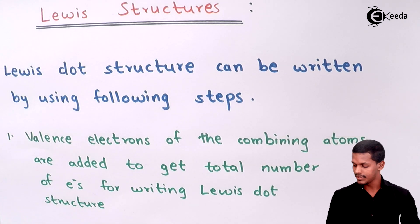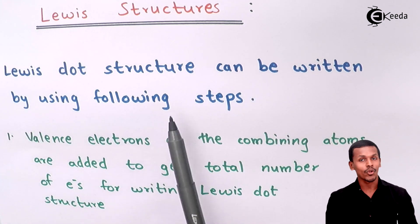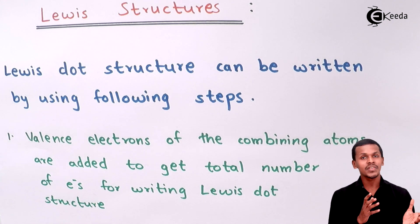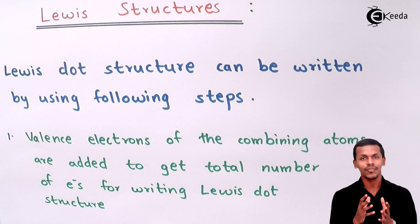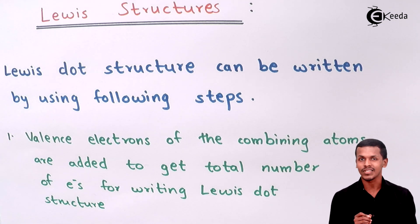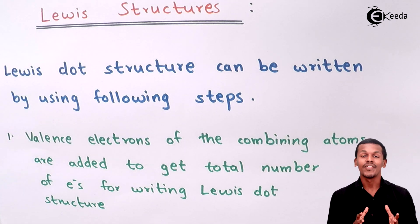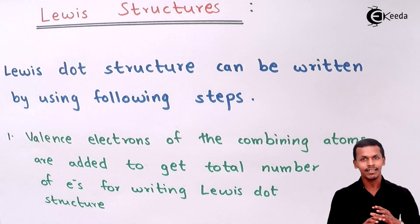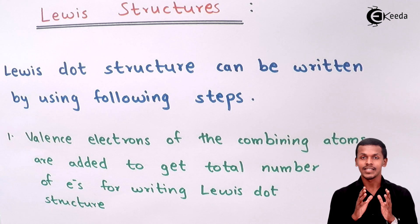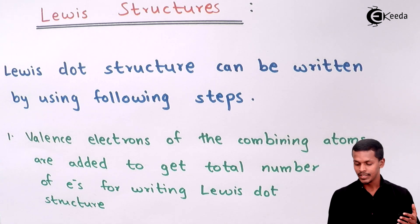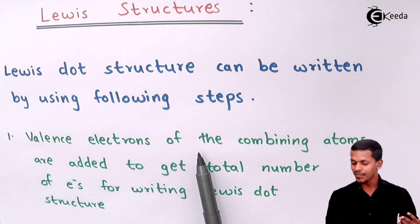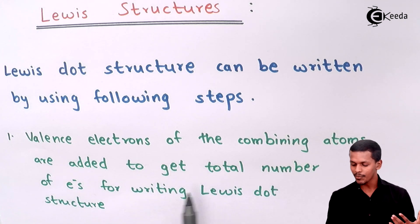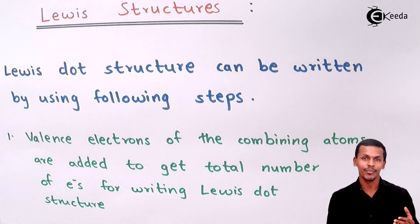So the Lewis dot structure can be written by following certain steps. We represent the structure by using dots, and these dots represent the valence electrons of that particular atom. The first step is: the valence electrons of the combining atoms are added to get the total number of electrons for writing the Lewis dot structure of a particular molecule.